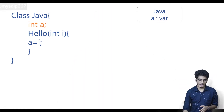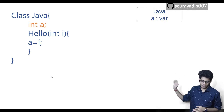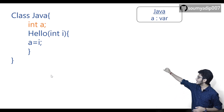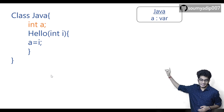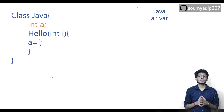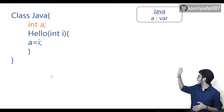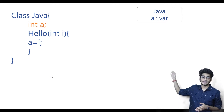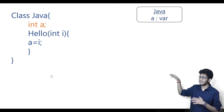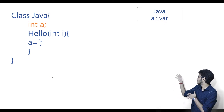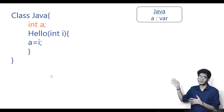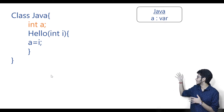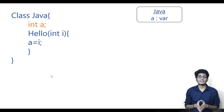As you can see on my screen, I have written a class called 'Java' and within that I have written 'int'. This int is the instance variable — I have written it outside of the constructor and outside of any method. As of now we have not declared any method within this class.